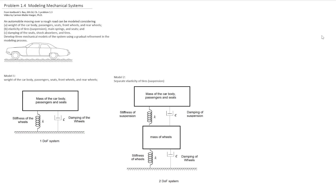We can consider a second model where we separate the mass of the car body, the passenger, and the seat, then consider the stiffness and the damping of the suspension, then the mass of the wheels, then the stiffness and the damping of the wheels. This is a two-degree-of-freedom system and is a little bit more elaborated than the first one.